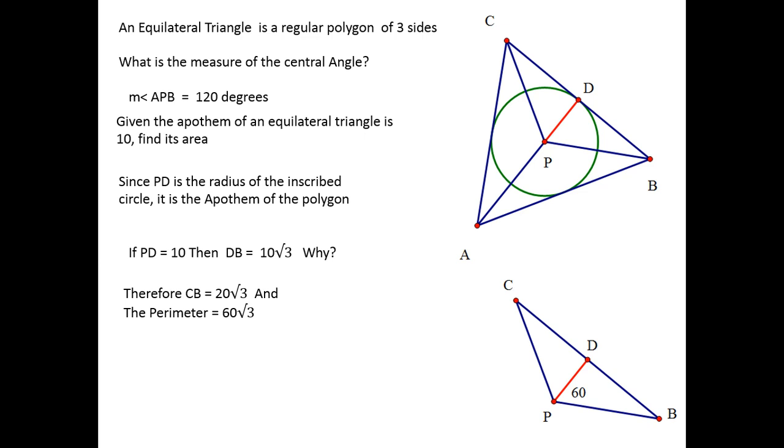Since that's but one side of the entire equilateral triangle, then the entire perimeter is 60 root 3. Remember, we just developed a new formula for the area of a regular polygon, one-half the apothem times the perimeter.